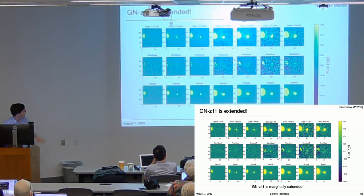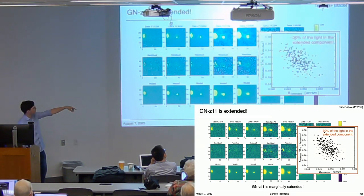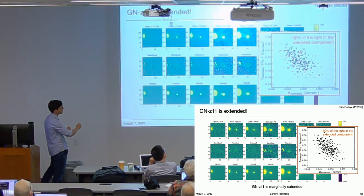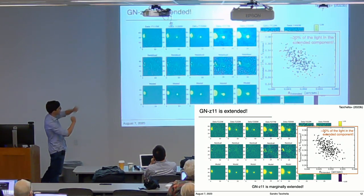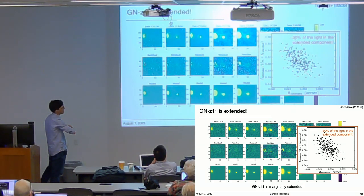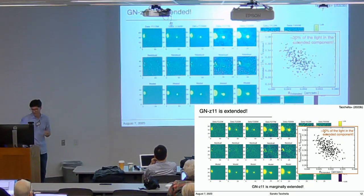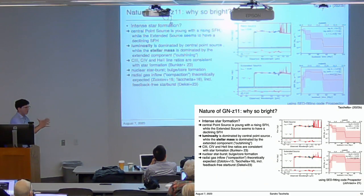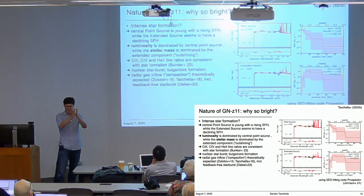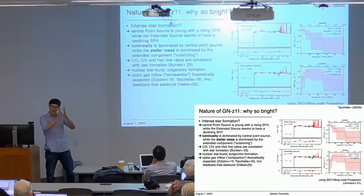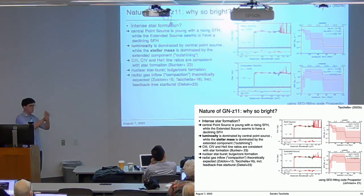We forward model the scene around GNZ-11 as a point source plus an extended component plus the haze. About 30% of GNZ-11's flux is in the extended component and 70% is in the central point source. The extended component has a size of about 0.05 arc seconds. This decomposition allows us to infer the stellar population properties of both components independently.